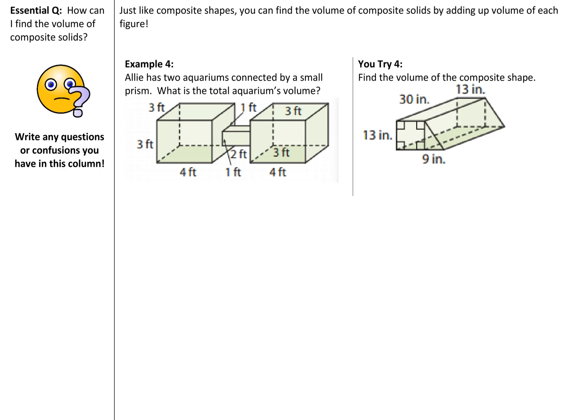So let's start here on example four. Alley has two aquariums connected by a small prism. What is the total aquarium's volume? So we have two shapes here. And if you look on the left and the right, they're actually both the same dimensions. So we can take whatever the value is of one and just double it, and then add that to whatever the volume of this shape is right here in the middle. So if I look here, it looks like my area of the base is 4 by 3. That's 3 up here, so it'll be 3 down here because it's parallel. Okay, we know 4 times 3 is 12, so that's your area of the base, times your height, which is 3, gives me 36 feet cubed.